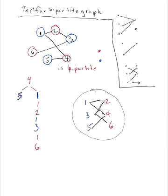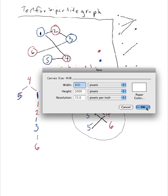Okay, let's do an example where it's not a bipartite graph. One, two, three, four, five.